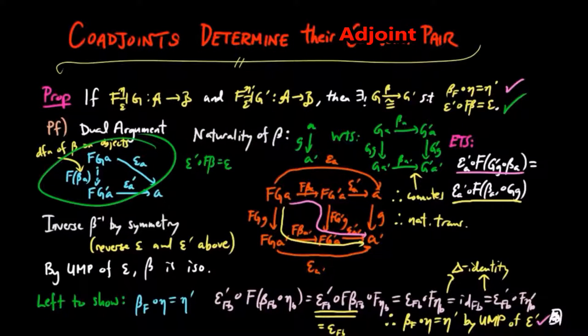We also have the dual argument that coadjoints determine their adjoint pair, and we are going to skip this proof, but if you want to try to follow the arguments I have given the proof below. Therefore, we see that adjoints and coadjoints are intrinsic properties of functors with essentially unique adjoint coadjoint pairs, much like the uniqueness of an inverse to a morphism in the category. So when we say a morphism is an isomorphism, it's much like us saying that a functor is an adjoint or a functor is a coadjoint. We might not give the explicit pair, but we know that it exists up to unique natural isomorphism of functors.